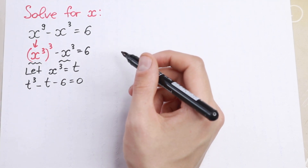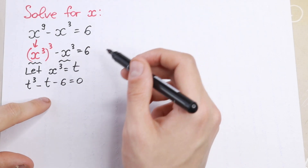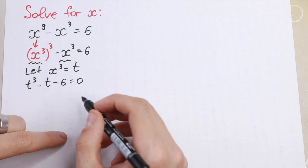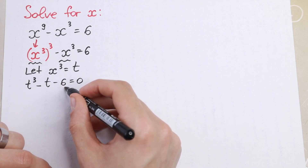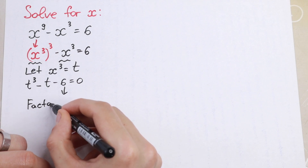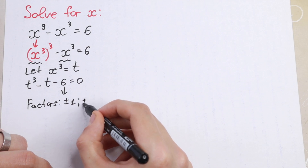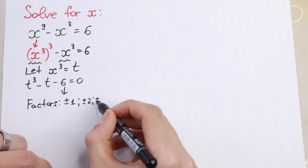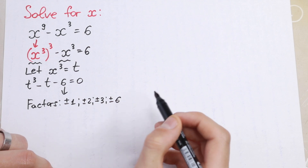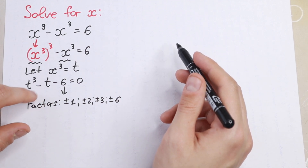How can I solve this equation? There are a lot of ways to solve a cubic equation, but I want to show you my approach. First, we need to find the factors of 6. So the factors are: plus or minus 1, plus or minus 2, plus or minus 3, and plus or minus 6. And right now I need to find only one factor that satisfies this cubic equation.